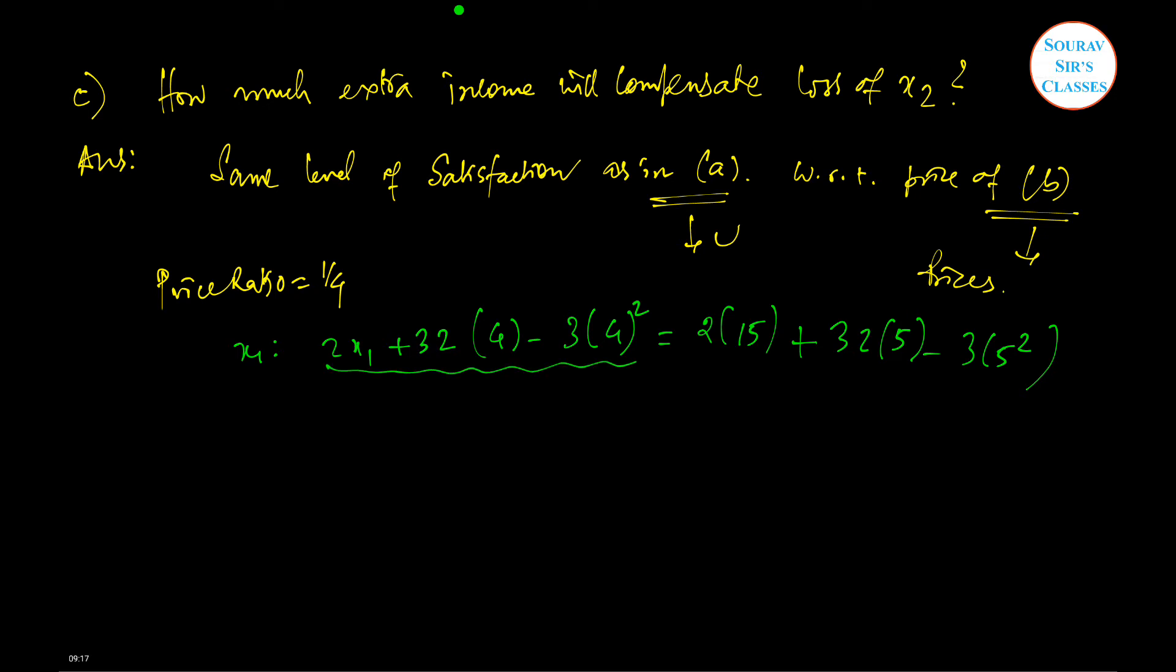We equate the satisfaction level in A to the satisfaction level from the bundle in which x2 is equal to 4. Solving for x1, you will find here 17.5.